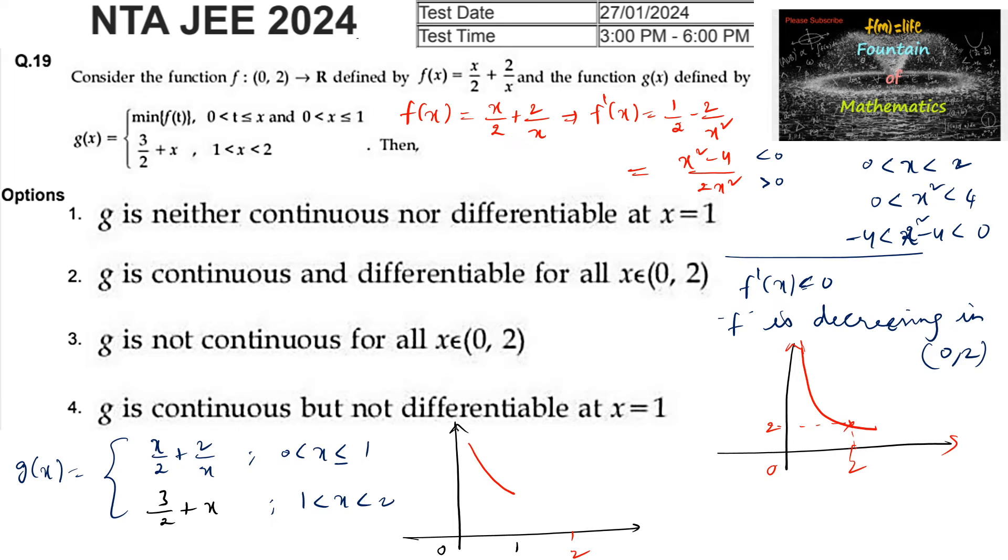At x = 1, we have 1/2 + 2/1 = 5/2. Also at x = 1, the other piece gives 3/2 + 1 = 5/2. Both pieces meet at the same point, and the second piece is a straight line.